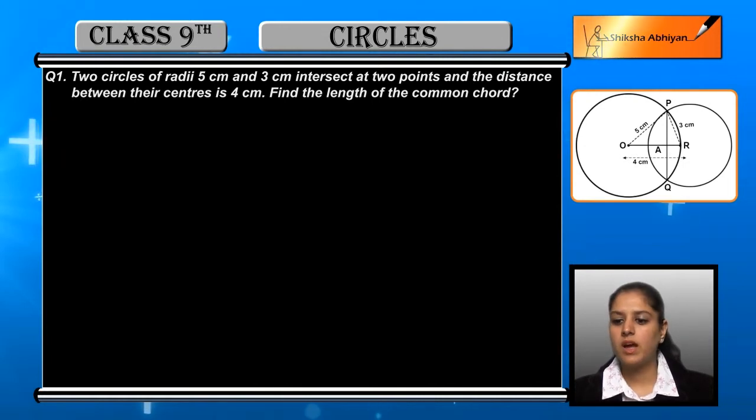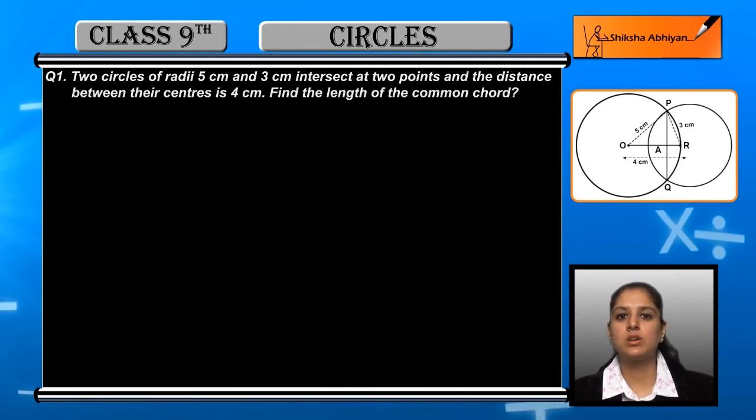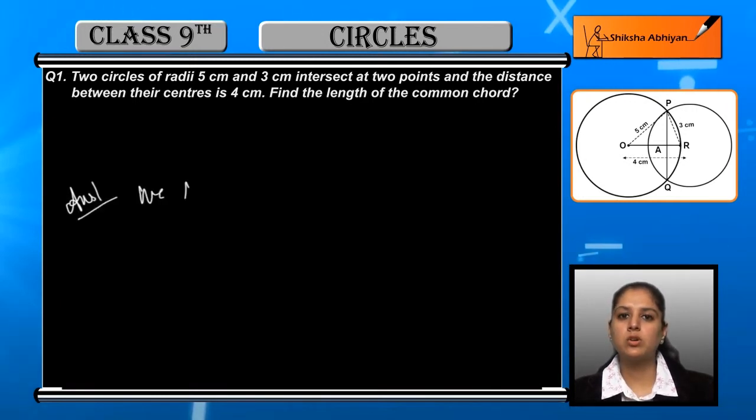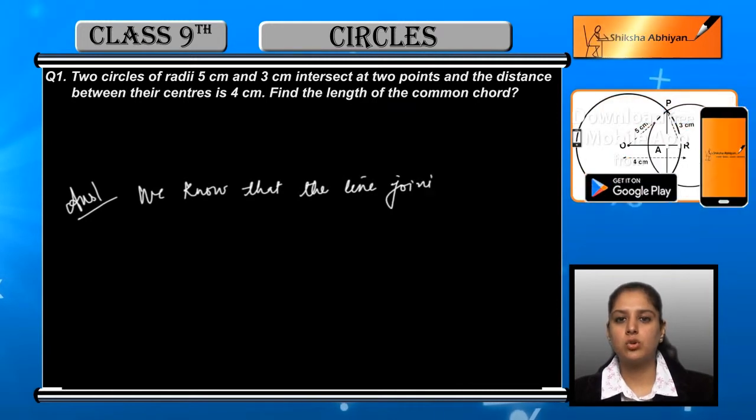First, the radii are given and the distance is given. We know that the line joining the centers of two different circles, one with 5 centimeter radius and one with 3 centimeter radius, is perpendicular to the common chord. The common chord and the line joining the centers are perpendicular to each other.